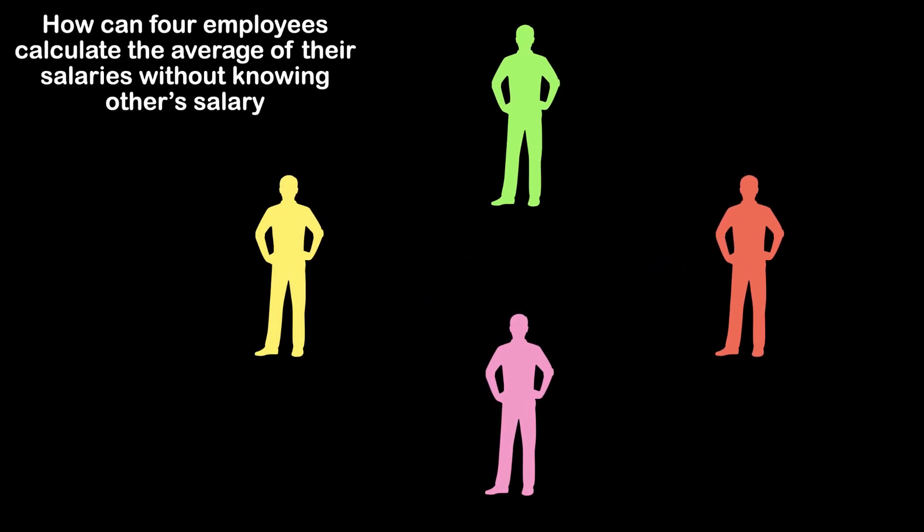First of all, this solution has a limitation that information is partially passed and there needs kind of some trust level. So let's say the four co-workers are A, B, C, and D, and their individual salaries are Sa, Sb, Sc, and Sd respectively. For knowing the average of their salaries without disclosing their own salaries to each other, they have to follow these steps.